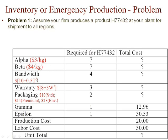For alpha, every kilogram costs you $3. For beta, every kilogram costs you $4. Bandwidth is computed using this equation where the terahertz value is substituted to calculate the total cost in dollars. Let's calculate this for our product.